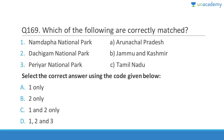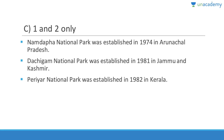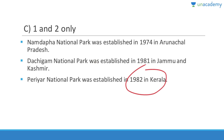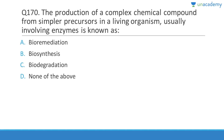Namdapha National Park is in Arunachal Pradesh — correct. Dachigam National Park is in Jammu and Kashmir — correct. Periyar National Park is in Kerala — the statement given was wrong. Answer is C — one and two. Namdapha was established in 1974, Dachigam in 1981, and Periyar in 1982.